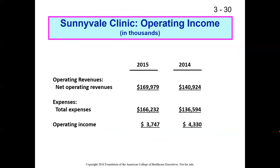Now let's summarize operating income. Net operating revenues were $169,000 in 2016, and total operating expenses were $166,000. Operating income equals operating revenues minus operating expenses. That's not yet our net income, because there are other sources of revenue and expense that an organization typically sees.